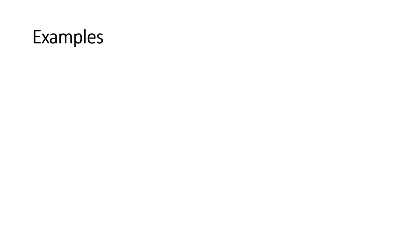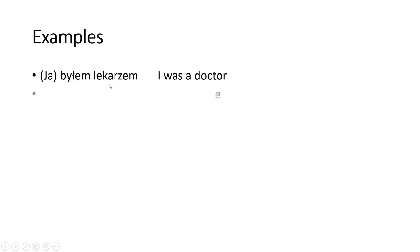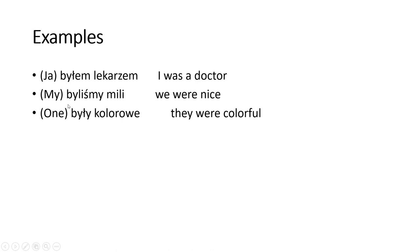Let's look at examples. 'Byłem lekarzem' — I was a doctor. You don't have to say 'ja' (I); just 'byłem' tells me you're male talking about yourself. If you said 'byłam' it means you're a girl. 'Byliśmy mili' — we were nice, talking about guys because we kept the '-l'. 'Były kolorowe' — they were colorful, female plural, used for objects like flowers or clothes.